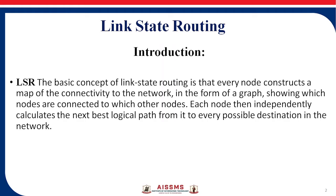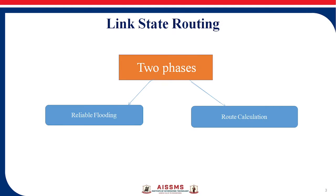This is the LSR, which we use to forward the shortest path from one node to every other node in the network. The LSR uses Dijkstra's algorithm to execute this whole process. There are two phases in LSR: the first is reliable flooding, and the second is route calculation. We use these two phases in our LSR.